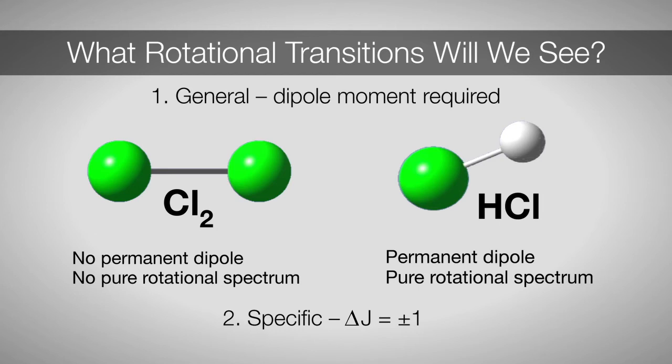Just like vibrations, rotations have general and specific selection rules. The general selection rule for rotational spectroscopy is that molecules must have a permanent dipole moment. Molecules like chlorine will not have a pure rotational spectrum, whereas molecules like HCl will have a rotational spectrum. The specific selection rule for rotations is delta J equals plus or minus one. Unlike vibrations, we usually do not see this selection rule relaxed. For our experiment, we'll see this rule as followed.